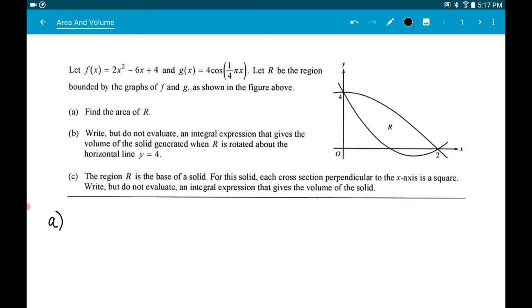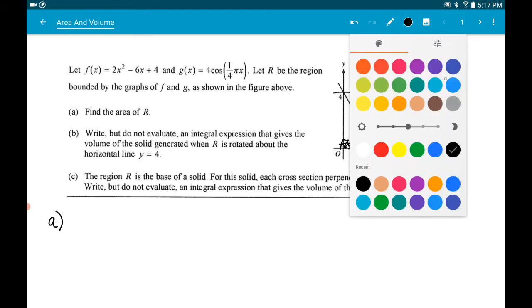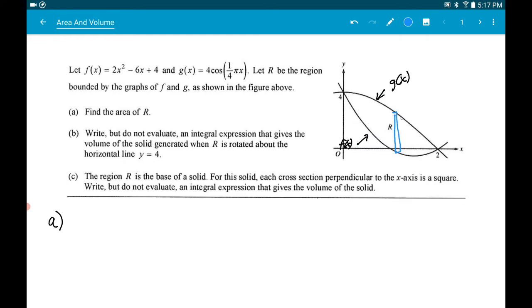We've got an area defined here between the curves of f(x) and g(x). It looks to me like this function is g(x) because it has a shape of cosine. And this function at the bottom here has a parabolic shape. I'm going to call that f(x). So part a is just find the area. We've talked about in class how we can do a top minus bottom idea.